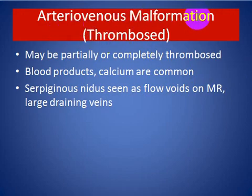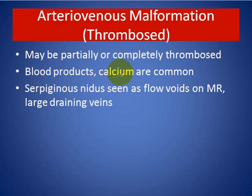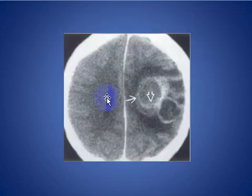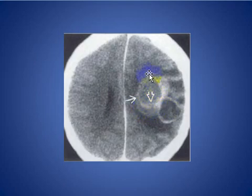Arteriovenous malformation: can be partially or completely thrombosed. Blood products and calcium are common. Flow voids are seen on MRI with large draining veins. Here we see an axial CT scan showing a heterogeneous ring-enhancing mass with fluid level due to recent hemorrhage — this is a thrombosed AVM.